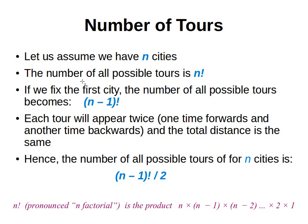To calculate the number of tours, let's assume we have n cities. The number of all possible tours is n factorial — written as n with an exclamation mark. This is the product of n times (n−1) times (n−2), all the way down to 1. So if n was five, we say 5 × 4 × 3 × 2 × 1. The result of this multiplication is the number of all possible tours or paths.